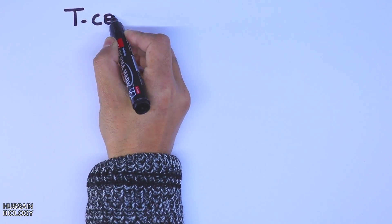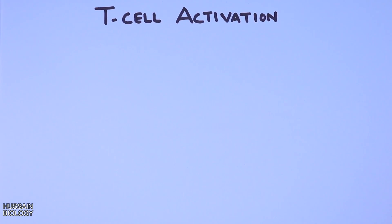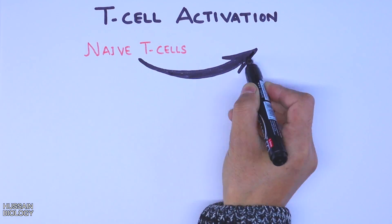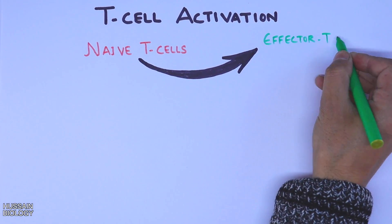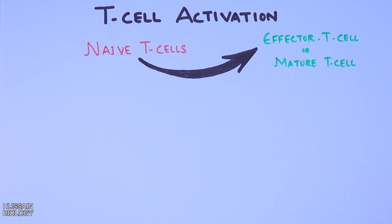In this video we will be discussing T cell activation. It is a process where naive T cells get activated into effector T cells or mature T cells. Simply put, naive T cell differentiation is driven upon activation, leading to different subsets of T cells.